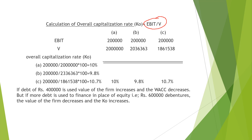Third case value of the firm is 18,61,538. Overall capitalization rate: first case is 2,00,000 ÷ 20,00,000 × 100 = 10%. Second case is 2,00,000 ÷ 20,36,363 × 100 = 9.8%. Third case is 2,00,000 ÷ 18,61,538 × 100 = 10.75%, showing the overall cost of capital first decreases then increases.